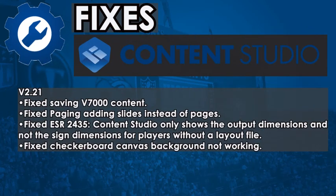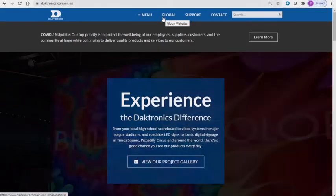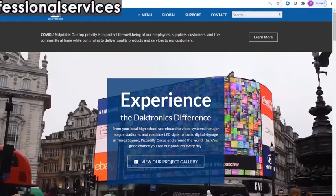Version 2.21 fixes: fixed saving the V7000 content; fixed paging adding slides instead of pages; fixed ESR-2435 where Content Studio only shows the output dimensions and not the sign dimensions for players without a layout file; and fixed checkerboard canvas background not working.